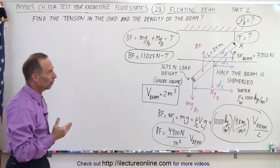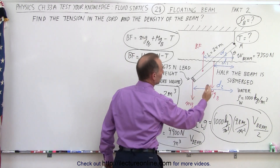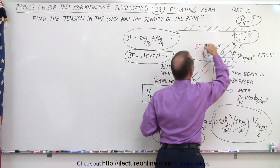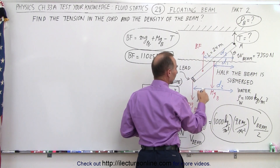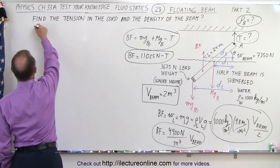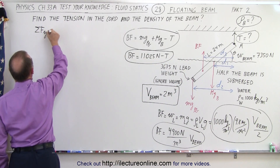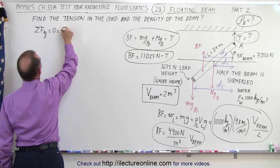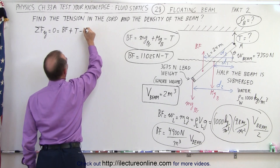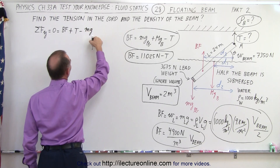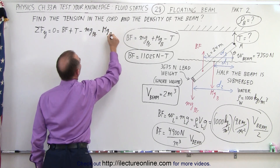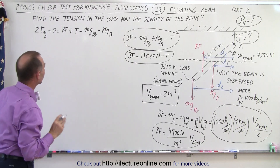First, the tension in the chord. We notice that the tension is going to be acting in this direction upward. So the tension plus the buoyancy force should equal the weight of the lead and the weight of the beam. We can say that the sum of all the forces in the y direction add up to zero, which means the buoyancy force in the positive direction plus the tension in the positive direction minus the weight of the lead downward minus the weight of the beam downward all add up to zero.